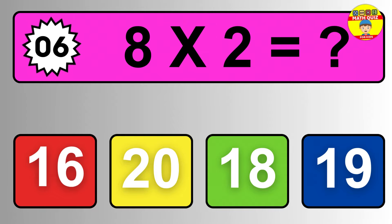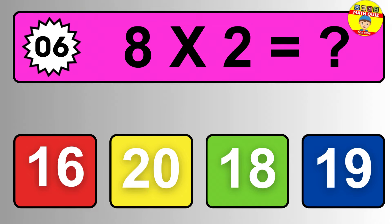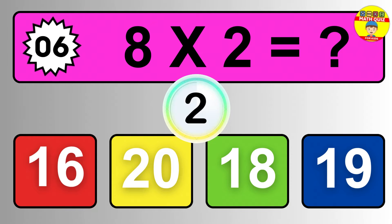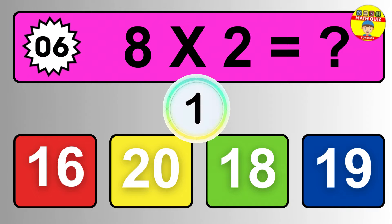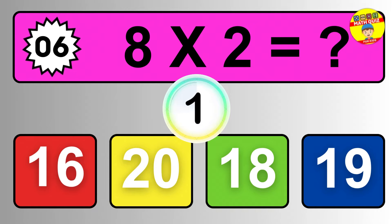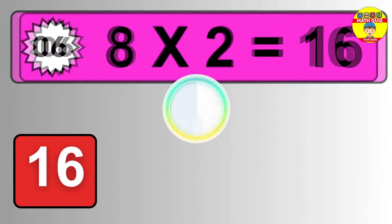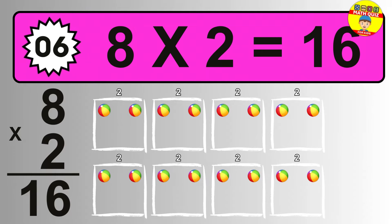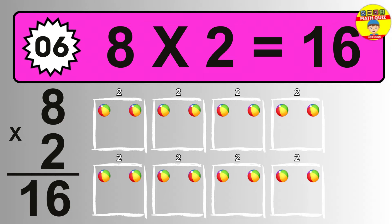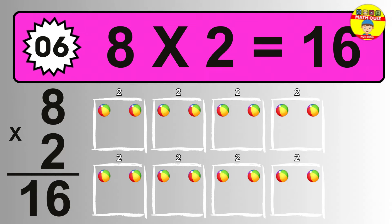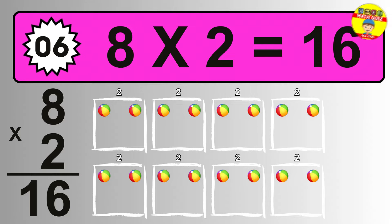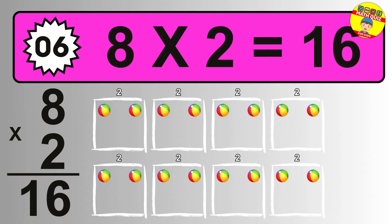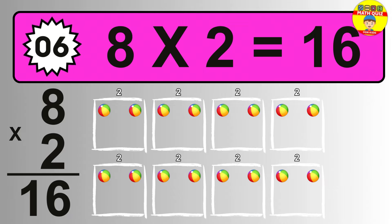Question six. Eight times two equals what? The answer is eight times two is sixteen. To calculate, we have eight groups with two balls each one. So how many balls do we have? Sixteen balls.